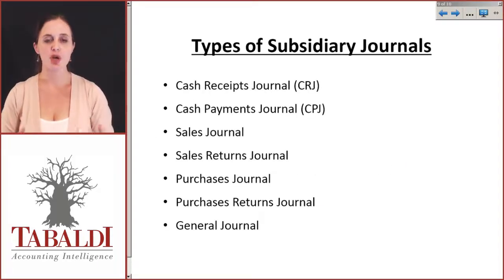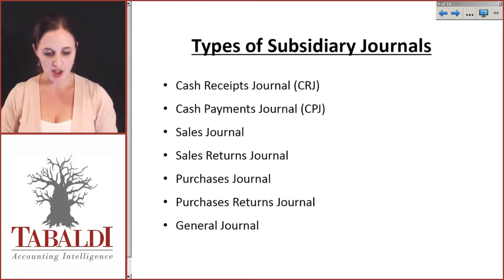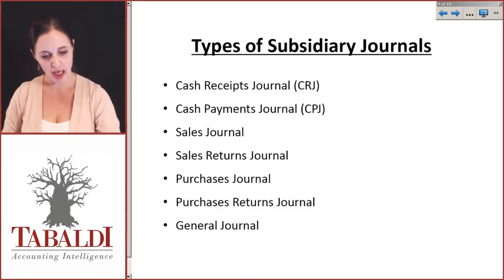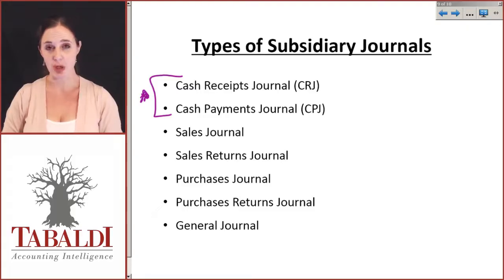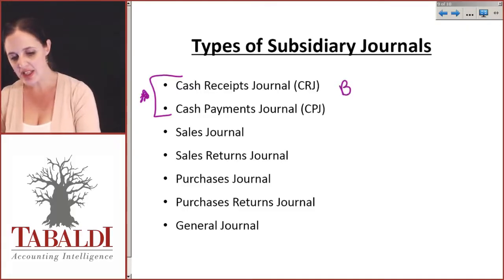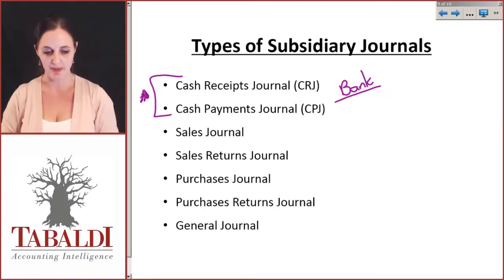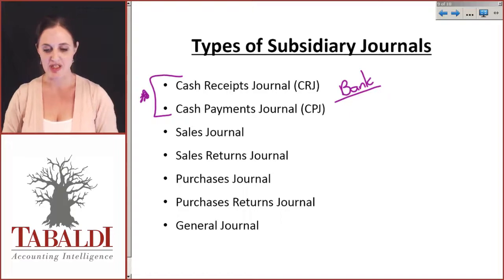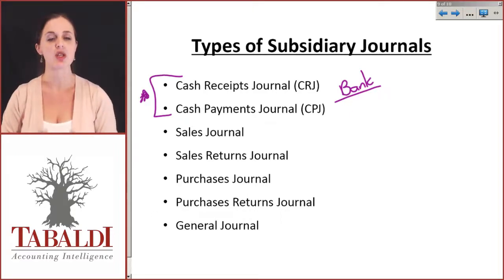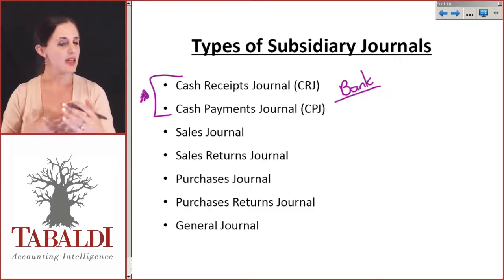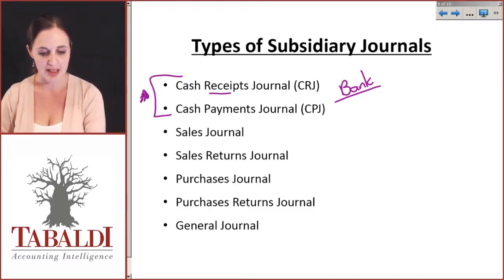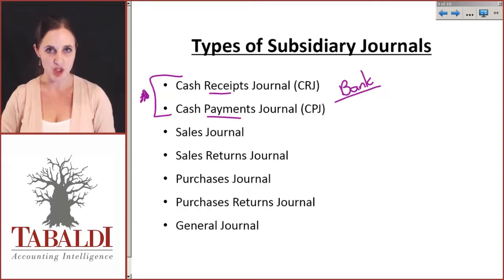The most common types of subsidiary journals are the Cash Receipts Journal (CRJ) and the Cash Payments Journal (CPJ). These two are very important and we'll spend quite a lot of time on them. The reason they are emphasized is because this is where the bank comes in — it's extremely important to control money coming in and out of the business. Any cash moving in or out is controlled by either the CRJ or the CPJ.